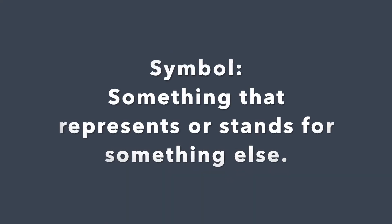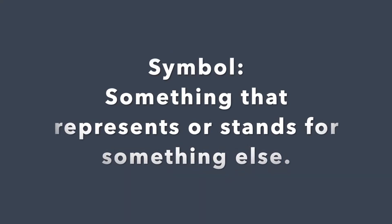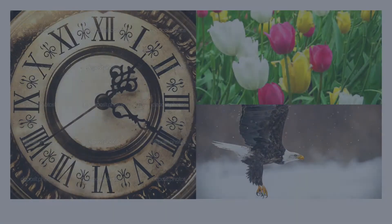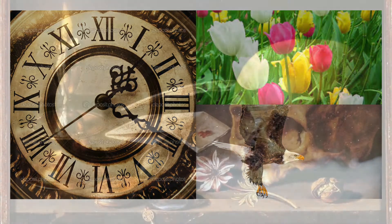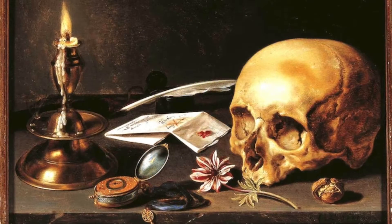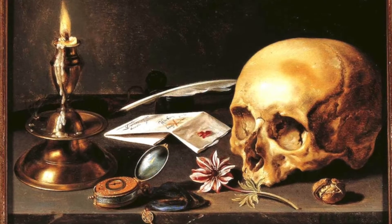As we begin our project today, I'd like to define symbols. A symbol is something that represents or stands for something else. We've got the clock, a tulip, and an eagle. Each one of these things can represent something individually for a specific person. The clock could represent age, the eagle could represent strength, and the tulip could represent love. You can combine these objects together into a picture to tell a story.